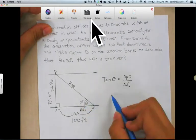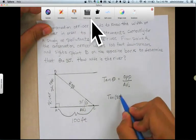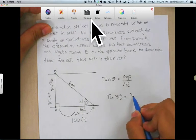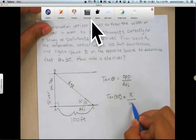Well, theta in this case happens to be 30 degrees. So the tangent of 30 degrees equals the opposite, in this case X, over the adjacent, which happens to be 100.